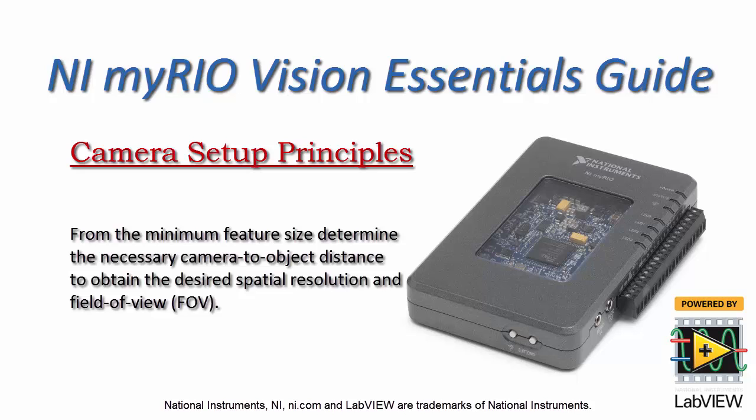Let's review the basic principles for camera setup for a machine vision application. Everything begins by deciding the minimum feature size and associated spatial resolution, and from there you can determine the required camera to object distance, and then also determine the available field of view.